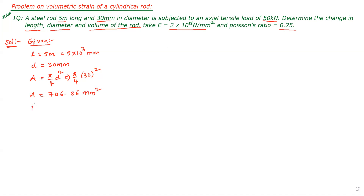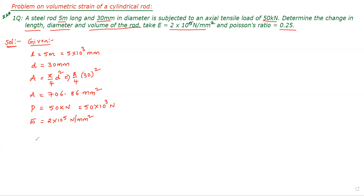Tensile load P = 50 kN, converted to 50×10³ N. We need to calculate change in length, change in diameter, and change in volume. Young's modulus E = 2×10⁵ N/mm². Poisson's ratio μ = 0.25. These are the given data.